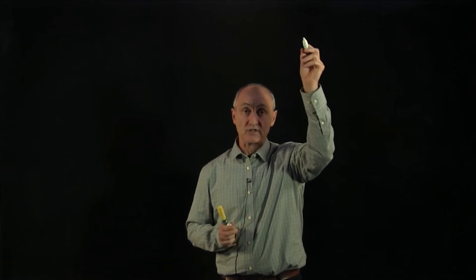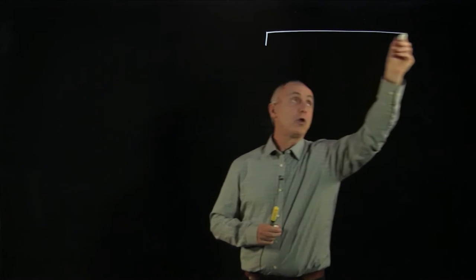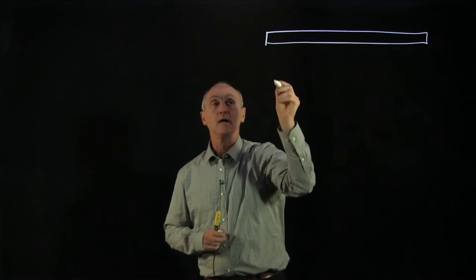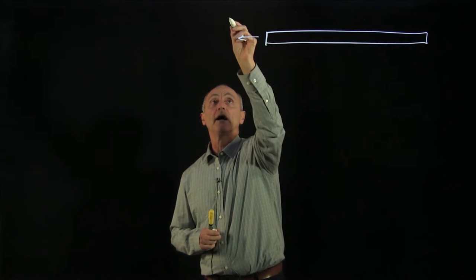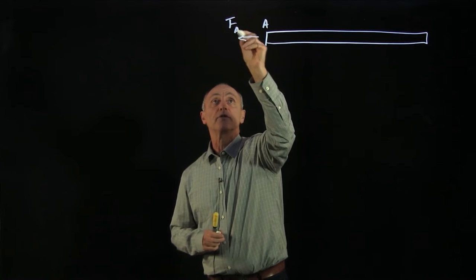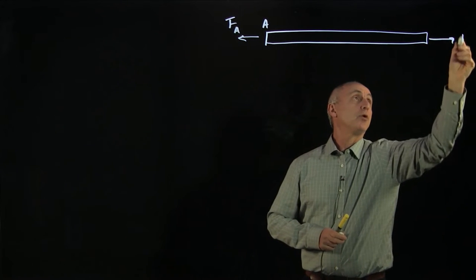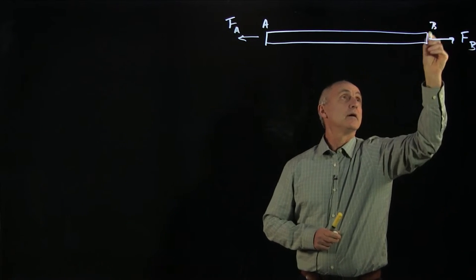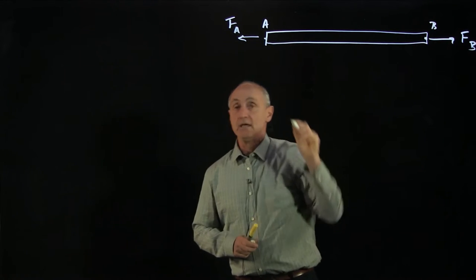Today, we'd like to discuss tension in a rope. Under what conditions is the tension uniform? Recall that if we had a rope, and say we were pulling, here's our one end, we'll call that, we're pulling at this end with a force A, and we pull on this end B with a force B.